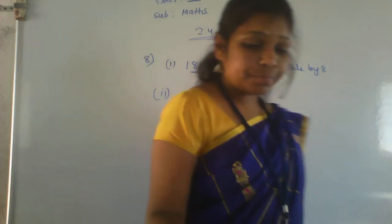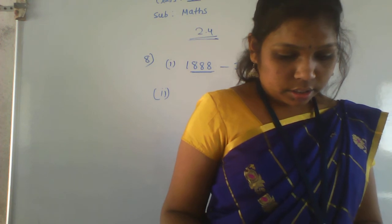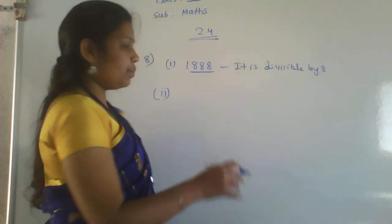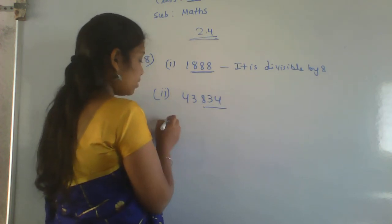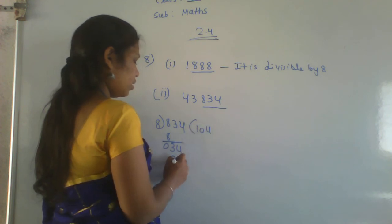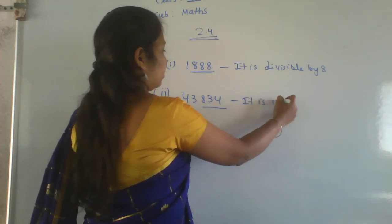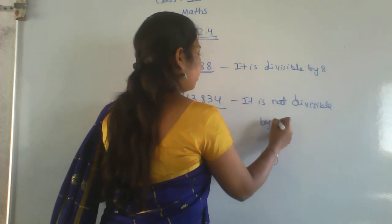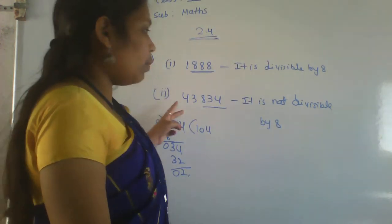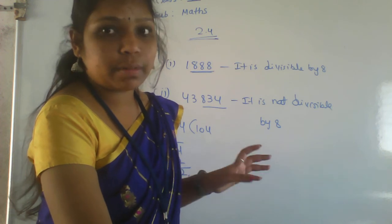Second number is 43834. The last 3 digits are 834. Dividing 834 by 8: 8×104=832, remainder 2. Since there is a remainder, it is not divisible by 8. For the third problem, take the last 3 digits and check if they are divisible by 8. Do it yourself.